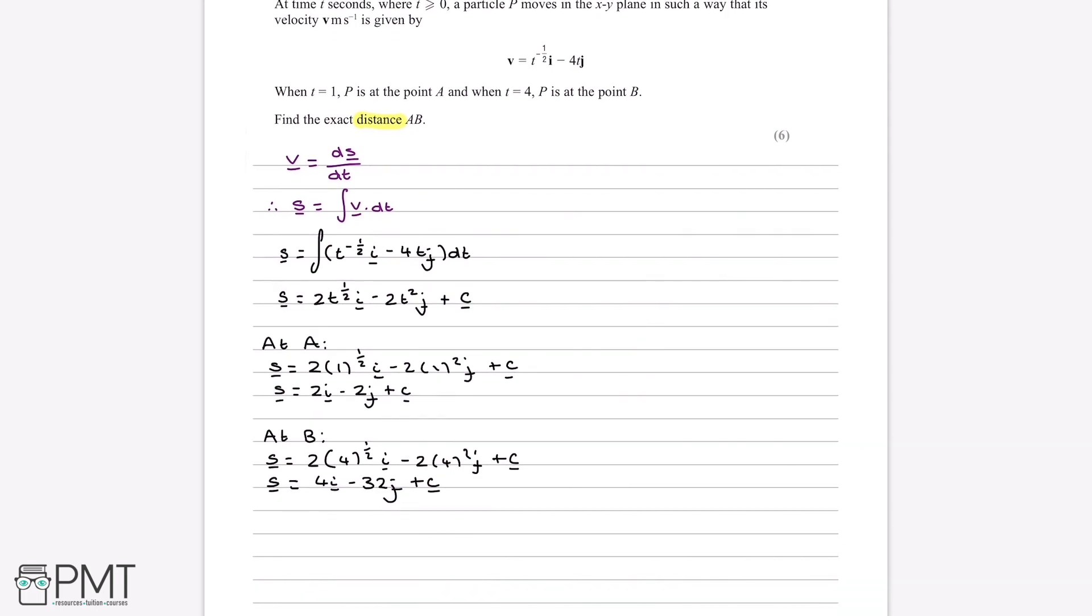So now that we have an expression for displacement at a and b, we can try and find the distance AB. And the way we do that is if we visualize these two displacements as points, so in the xy plane, as we're told right up here, if we drew a as coordinates, we know that if this was the origin, so this is when i and j are both 0, we know that a is 2i, which is 2 in this positive i direction, minus 2j, which is downwards. So a is around here, and b is 4i, so it's further along, and minus 32j, so it's much further down.